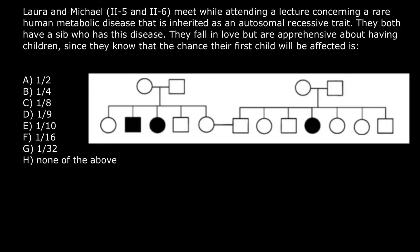Hello and welcome to Nikolai's genetics lessons. Today's problem: Laura (2.5) and Michael (2.6) meet while attending a lecture concerning a rare human metabolic disease that is inherited as an autosomal recessive trait. They both have a sibling who has this disease. They fall in love but are apprehensive about having children since they know that the chance that their first child will be affected is — choose one of these answers. I recommend you pause the video here, try to solve this problem on your own first, then run the video again and compare your answer with my explanation.